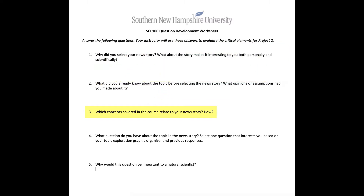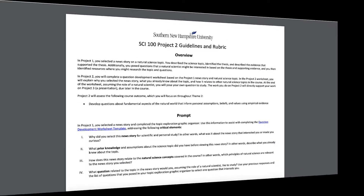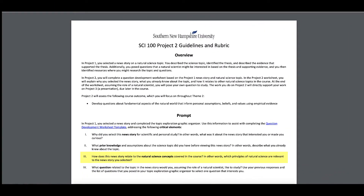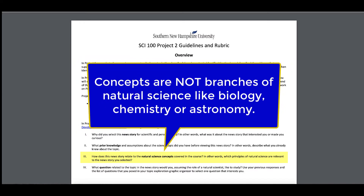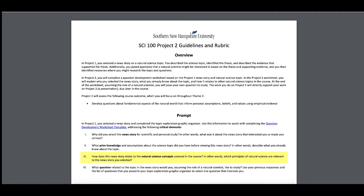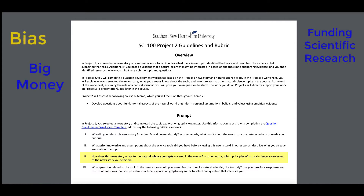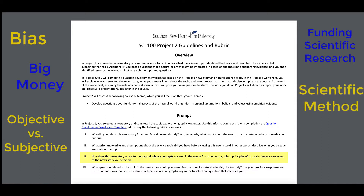Your response for this question will include the natural science concepts that are related to your news story and science topic. These concepts are not the same thing as the different branches or fields of natural science related to your news story. The concepts are the big picture concepts we have been exploring in this course, such as bias, funding and scientific research, making objective observations, the steps of the scientific method, and the role of curiosity.